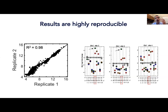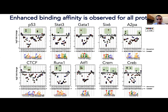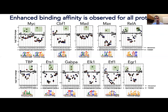We continued with additional transcription factors, and for every additional transcription factor we always got the same result. For 22 proteins overall that we had in this paper, all of them showed that certain mismatches within the binding site cause enhancement in the binding affinity.